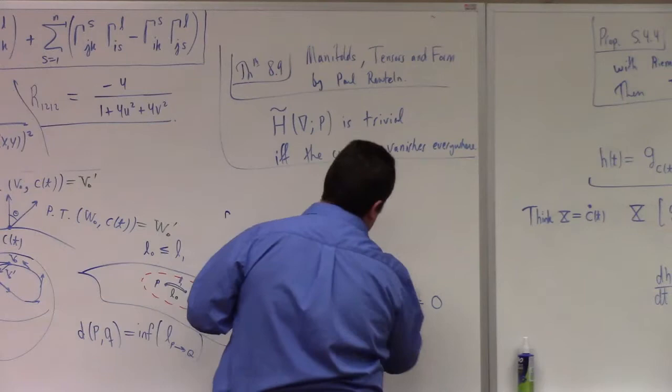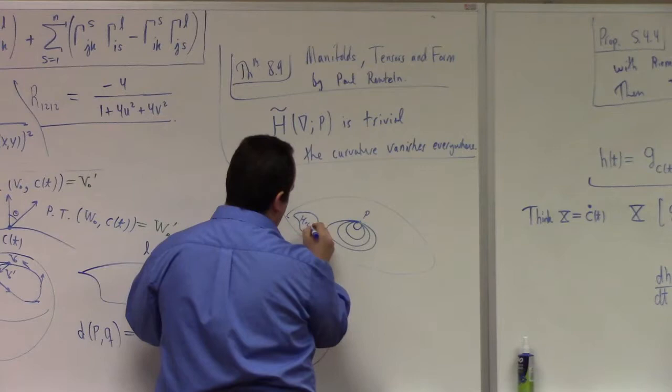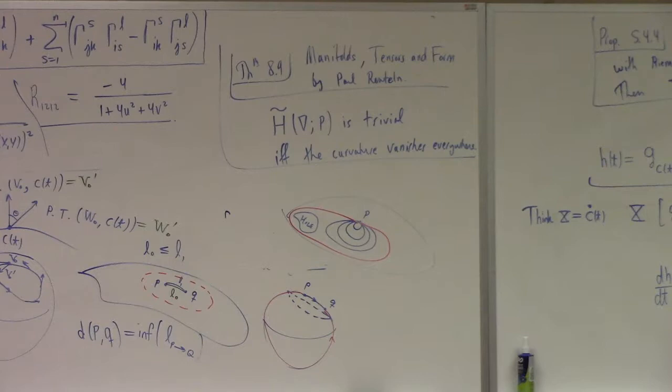The holonomy group of nabla based at P. Oh, this is actually the restricted holonomy group. It's the holonomy group of all contractible loops at P. So you look at the loops at P, which, you know, you take your manifold. You take your point P, and you look at the loops, which are contractible. I mean, if there's a hole in the manifold over here, what you're not allowed to do is this. All right? It's no bueno. Well, the contractible loops, the ones that can be smoothly deformed to a point, and then it's in the holonomy group if it is, I believe it's just the angle between vectors that are parallel transported around the loop with respect to the connection nabla.